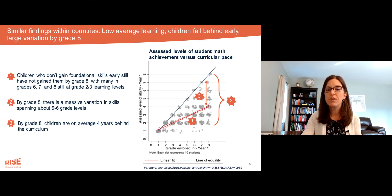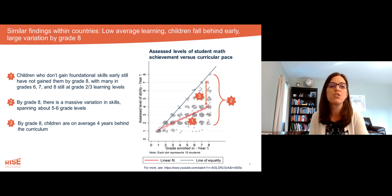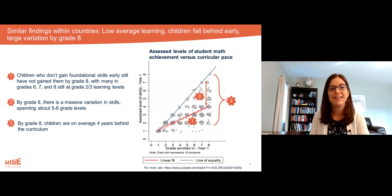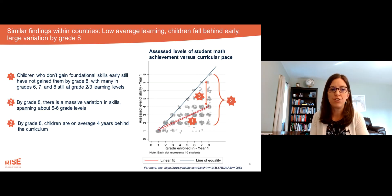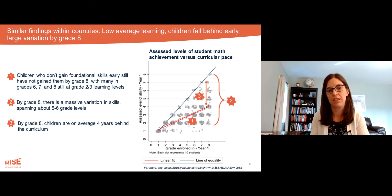Looking at that first orange star, we can see that children who don't gain foundational skills early on often still have not gained them even by grade eight. With many children in grades six, seven, and eight still at a grade two or three learning level.